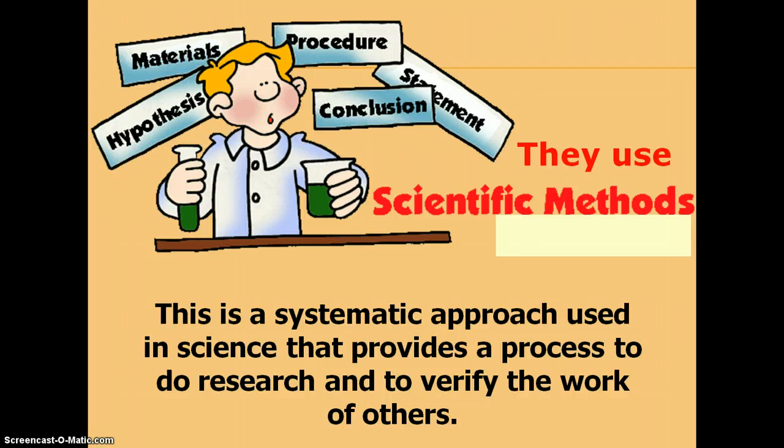Now, the second part here, where it says to verify the work of others, that's the most critical part of all of this, because you have to be able to verify the work. And so if I were to come up with a cure for cancer one day in the lab, but no one else could ever recreate it, then it's really not any good, because you have to be able to repeat the results.